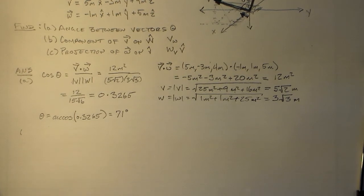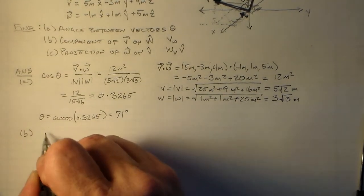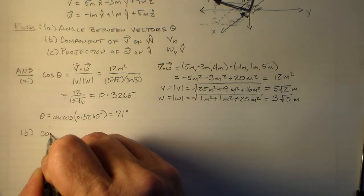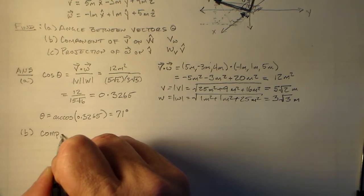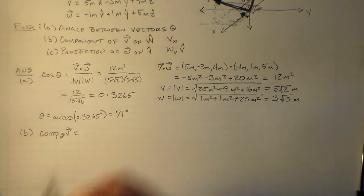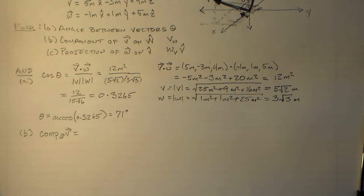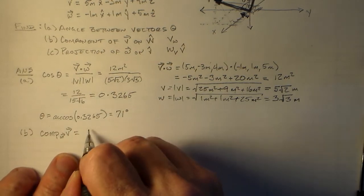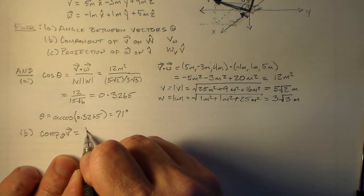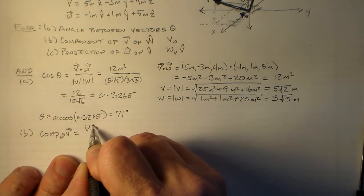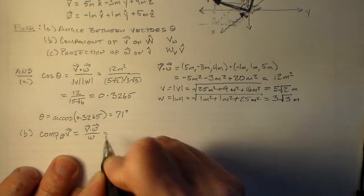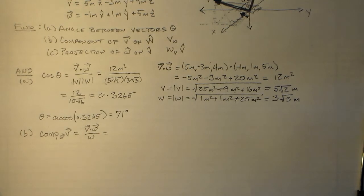All right, so B, we want to find this projection, right? Or the component, right? Okay, so we have the component of V in the direction of W. Right? That seems good to me. How do we find that? Well, we have V dot W over W. That's what they have in your, that's what they have in your book. That, that's what it is.